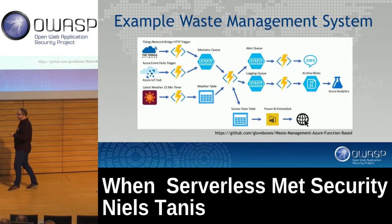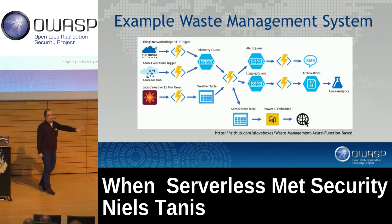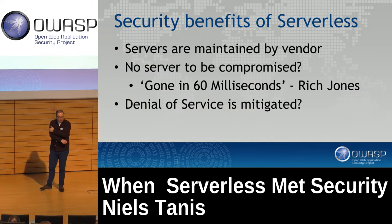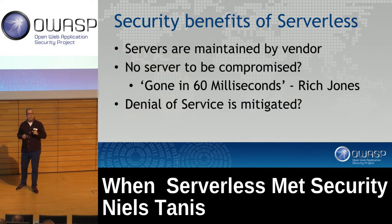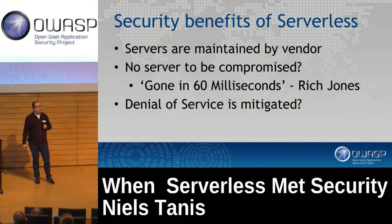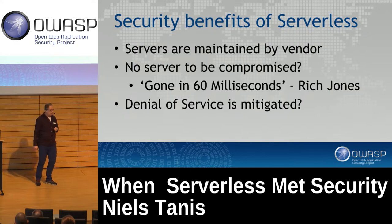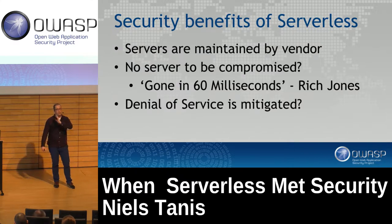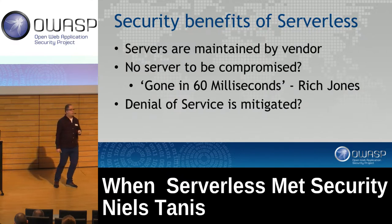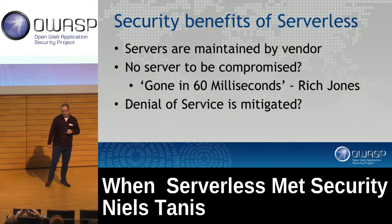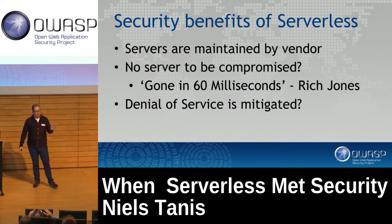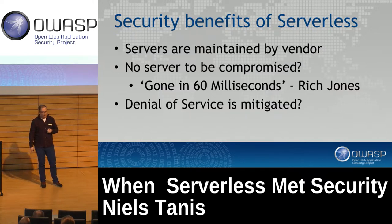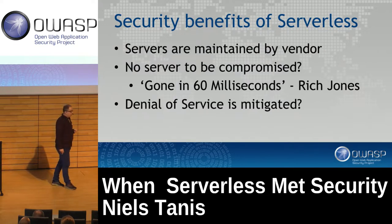We've talked a lot about concepts, architectures, and basics. So what are the security benefits? One big benefit, as we saw with the responsibility matrix, is that servers and all the underlying infrastructure are managed by the vendors. If a new zero-day hits — like Heartbleed or anything low-level — one moment a function might run on a vulnerable server, but the next run might be on a new fully patched one. We can assume that AWS, Microsoft, and Google do a pretty good job keeping up with updates, red teams, and blue teams.